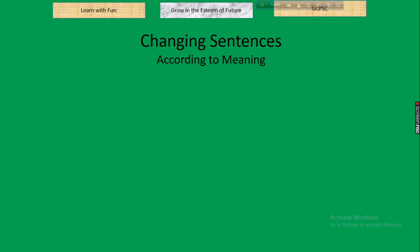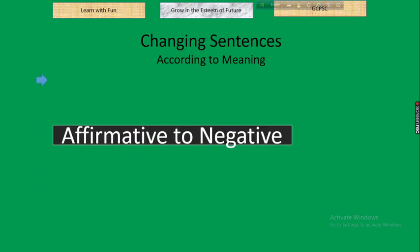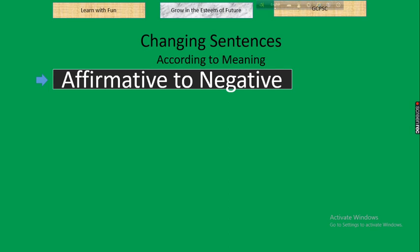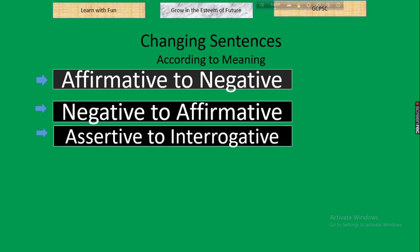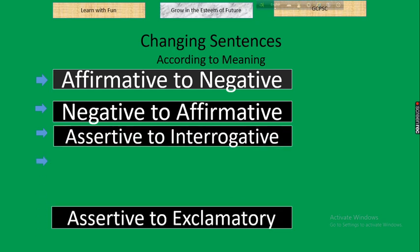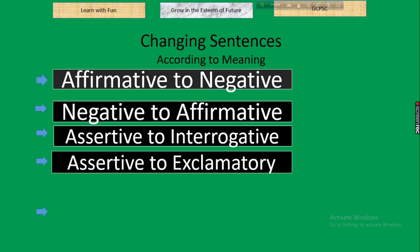Up to class 8 in our traditional syllabus we find changing sentences based on meaning, and in classes 9, 10, 11, and 12 we find changing sentences according to structure. Our today's presentation is based on changing sentences according to meaning. According to meaning there are several types: affirmative to negative, negative to affirmative, assertive to interrogative, assertive to exclamatory, and exclamatory to assertive.